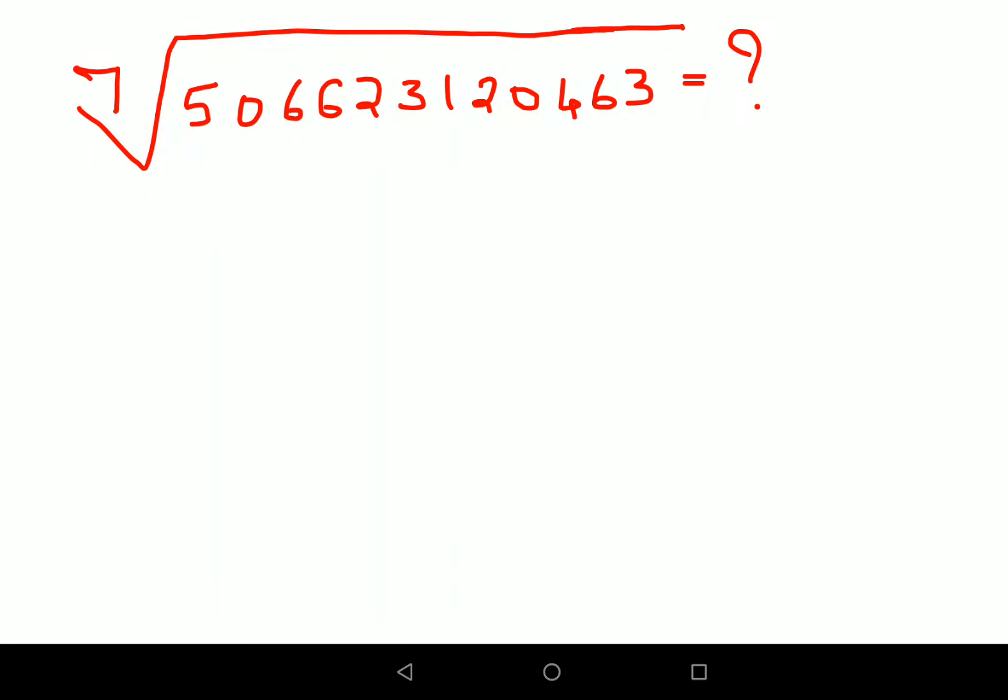Welcome everyone, so today I am going to show you how to find the 7th root of the number given which is 506623120463. This looks such a big number. The few things you need to remember is this number is the perfect natural number raised to power of 7.